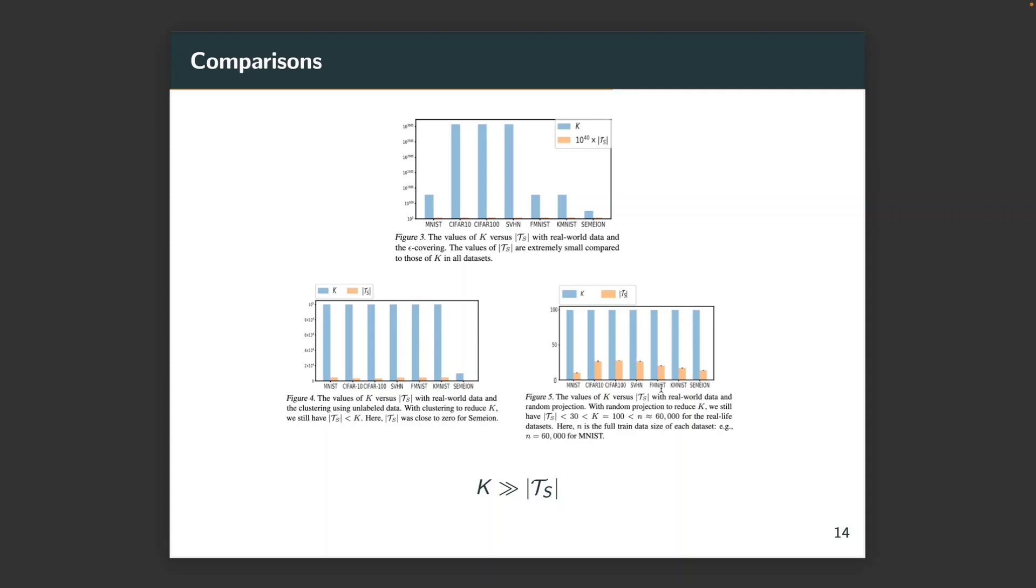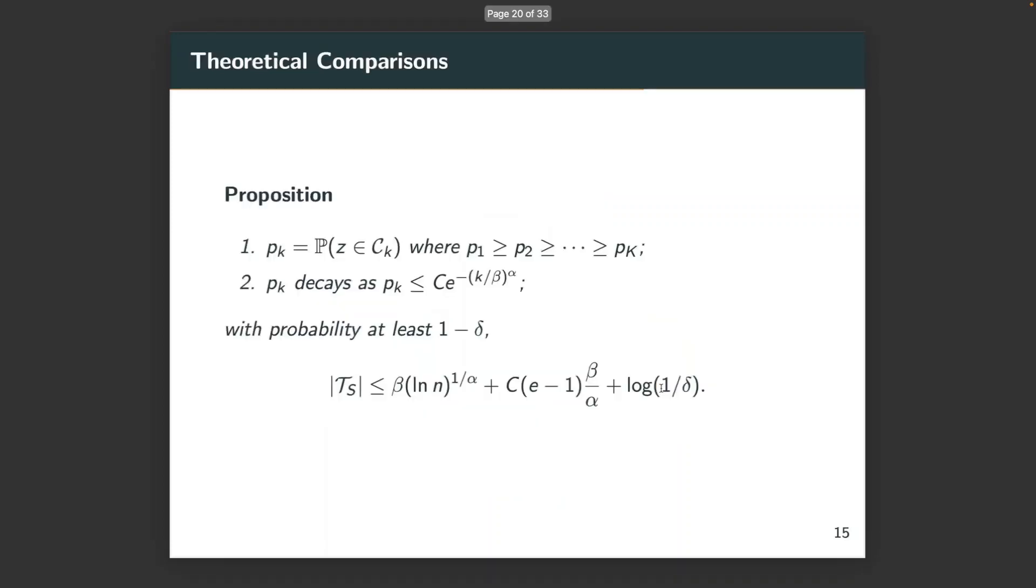And Figure 5 we have shown before, it is basically the inverse image of each covering in randomly projected space. And we can see the cardinality of |T_s| is much smaller than K.